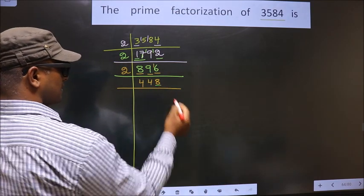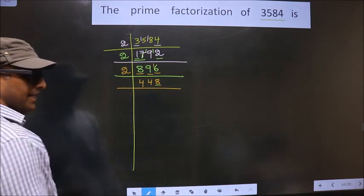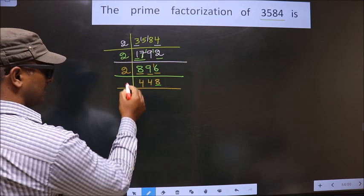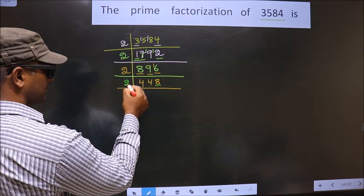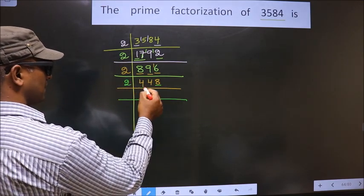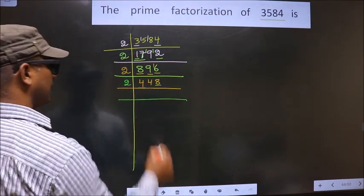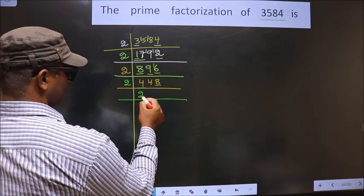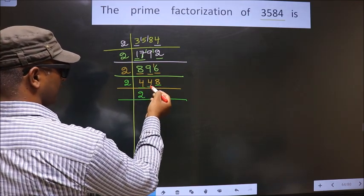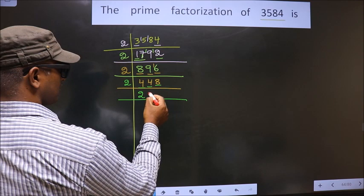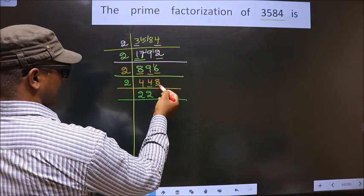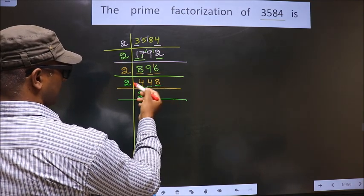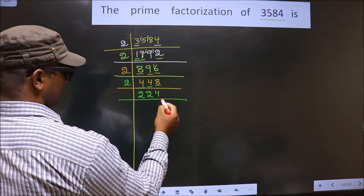Now, here the last digit is 8, which is even, so we take 2 here. First number is 4. When do we get 4 in the 2 table? 2 twos 4. Next, we have 4 again, so write 2 again. Next number is 8. When do we get 8 in the 2 table? 2 fours 8.